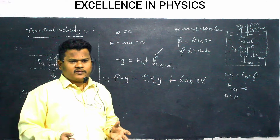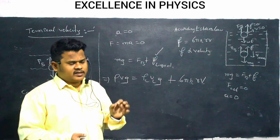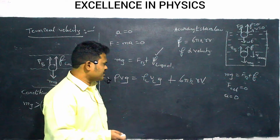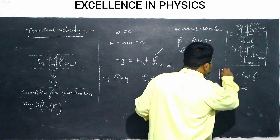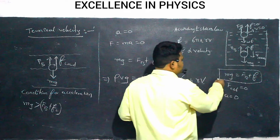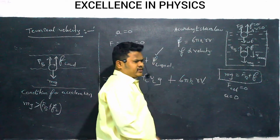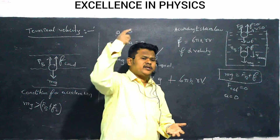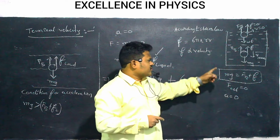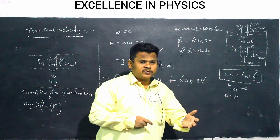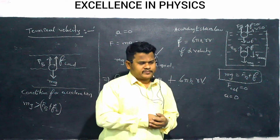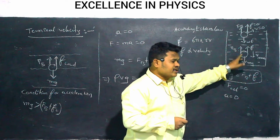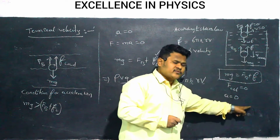From here, velocity will no longer change. The body continues to travel downward with the same speed V_max. That velocity is exactly what we call terminal velocity — the velocity achieved when downward forces and upward forces have become equal.